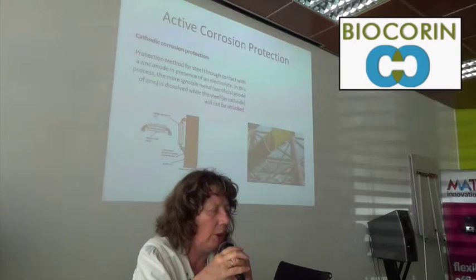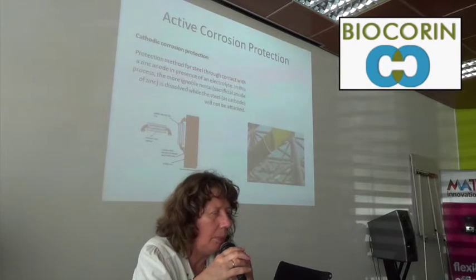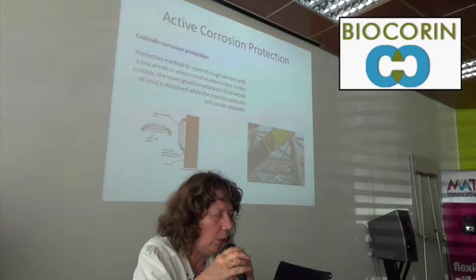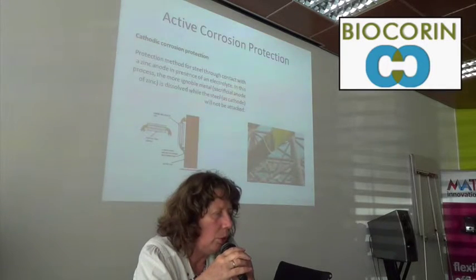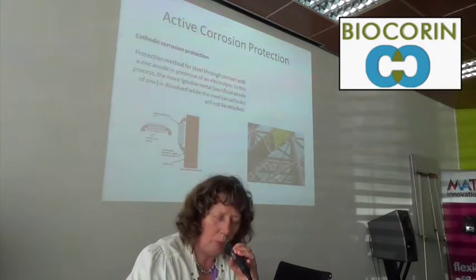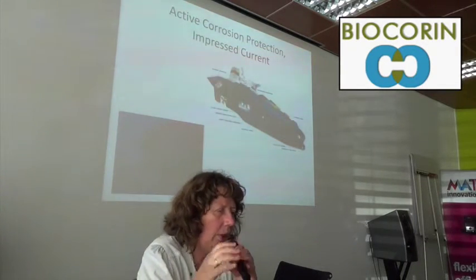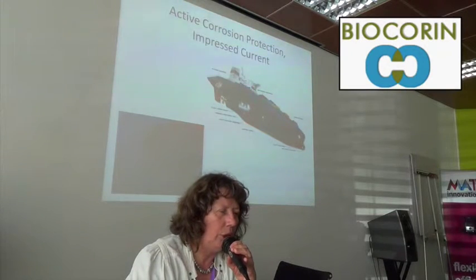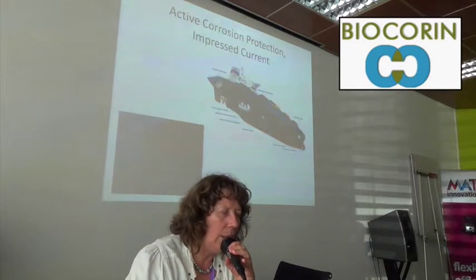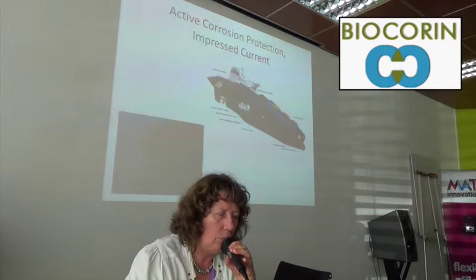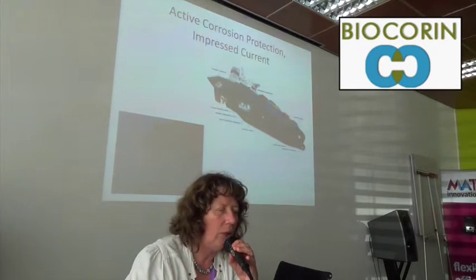Active corrosion protection is mostly cathodic corrosion protection. There are two ways to do this. The first one is to attach a zinc anode on the surface. In this process, the more ignoble metal — the sacrificial anode of zinc — will be dissolved, while the steel as cathode will not be attacked. The second active method is impressed current, mainly used in ships, where you increase the potential of the surface, thus reducing the electrochemical reactions.